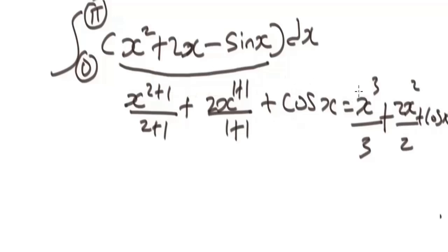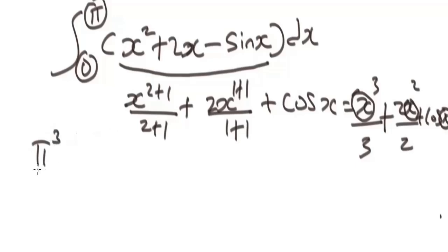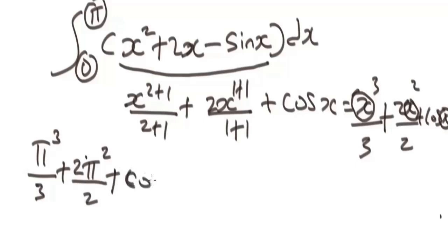You then plug in pi and zero into these values of x respectively, subtracting the lower limit zero from the upper limit pi. Starting with pi: you get pi to the power of three over three, plus 2 times pi to the power of two over two, plus cos pi.